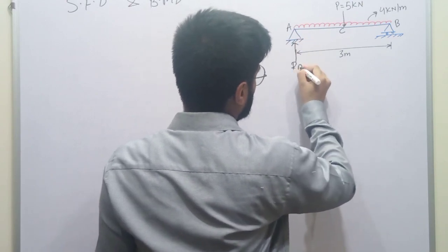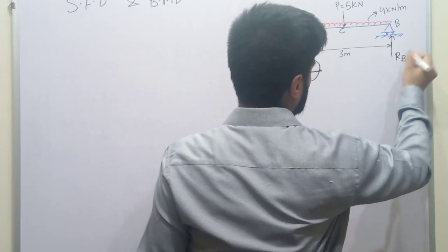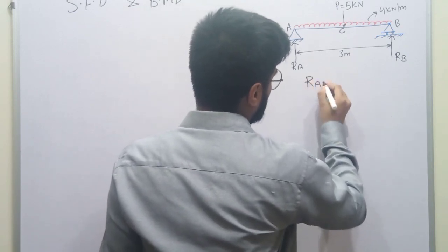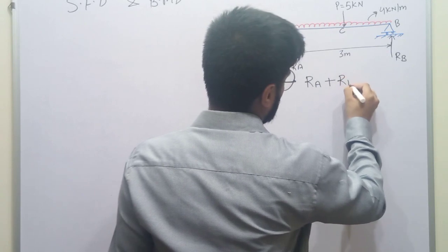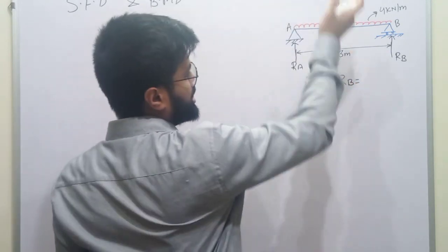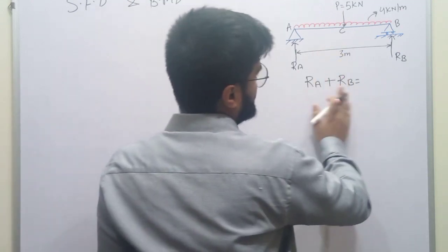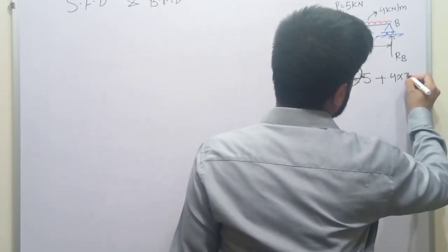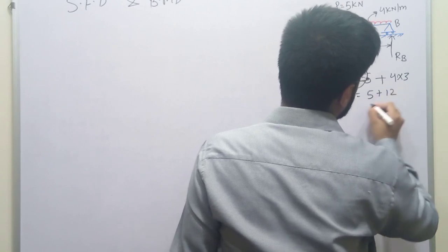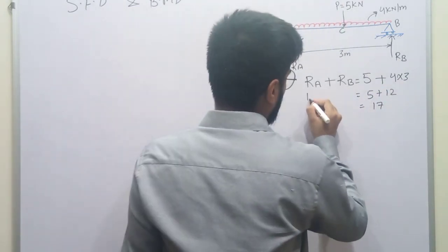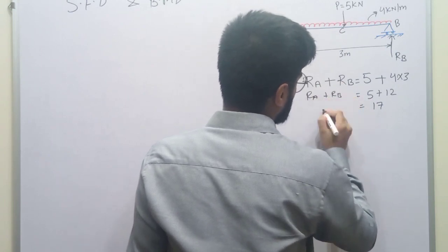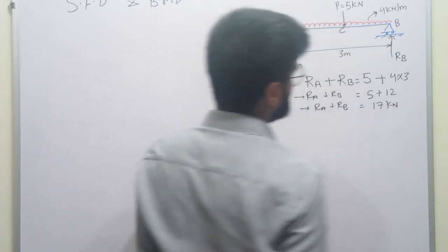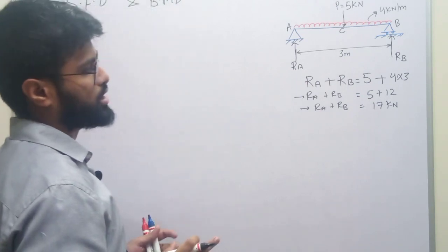यह simply supported beam है तो support पे सिर्फ vertical reaction मिलेगा। यहाँ पे RA और यहाँ पे RB होगा। यह symmetrical beam है तो force balance करेंगे Y direction में: RA plus RB will be equal to total load, जो है 5 plus 4 into 3, यानी 5 plus 12 = 17 kN। So RA plus RB is equal to 17 kilonewton.